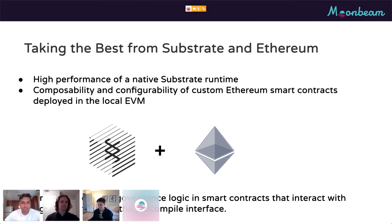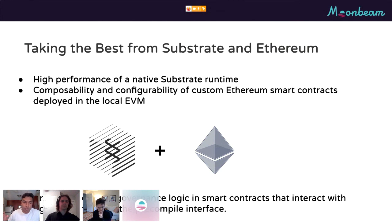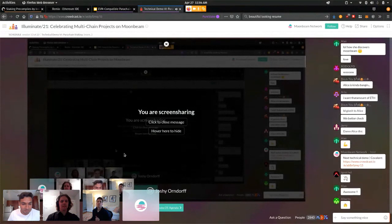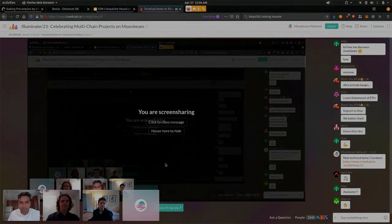To conclude: we're so excited about this because we're bridging the worlds of Substrate and Ethereum. We can harness the speed, efficiency, and high performance of a native Substrate runtime with our parachain staking implementation, but we also enable users to encode their own smart contracts — benefiting from the composability and configurability of custom Ethereum smart contracts deployed in our local EVM. This really shows that the whole is better than the sum of its parts, and we're very excited to see what you all bring. Thanks, everybody.